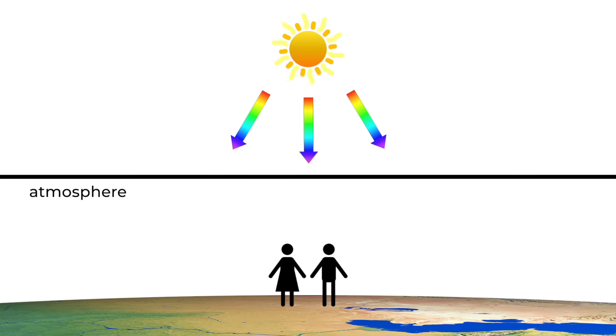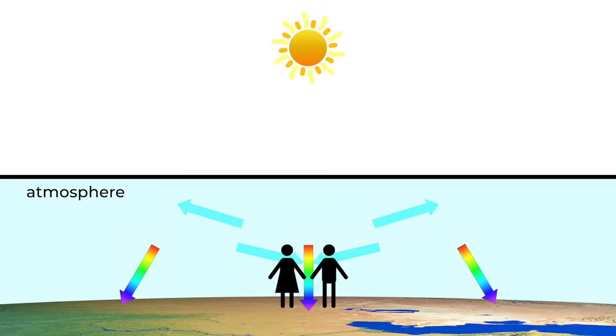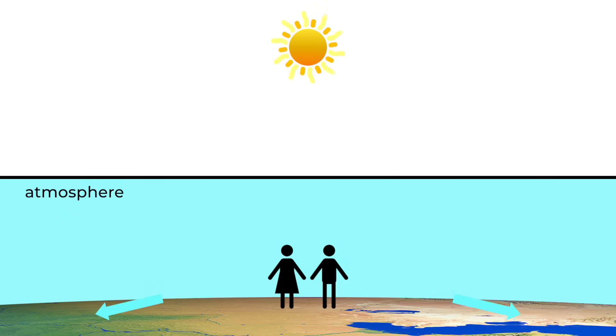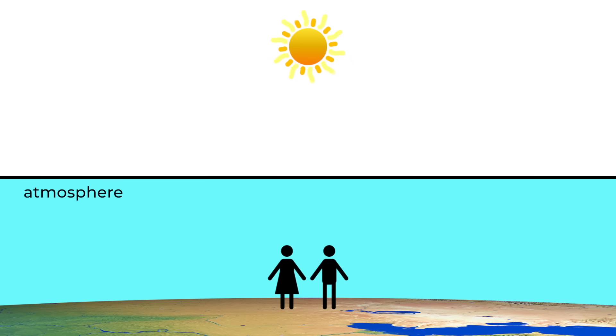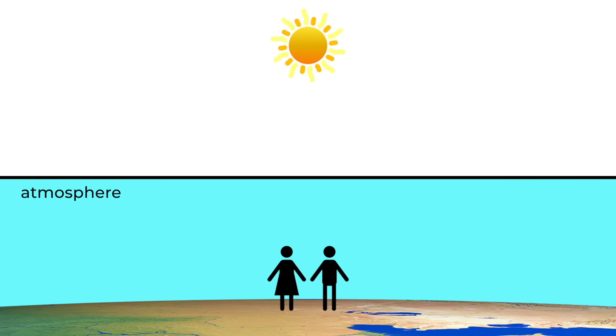This light, which looks white to us, passes through the atmosphere, and some of it scatters. The blue light scatters more than the red, and so that means that the sky is blue. The blue light we're seeing is the light scattered in the atmosphere. That's all there is to it.